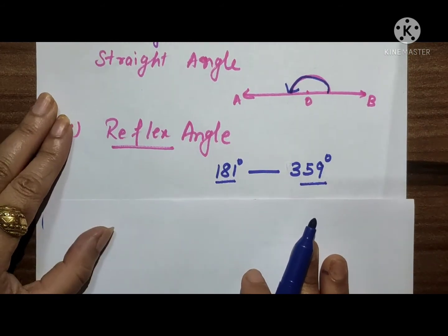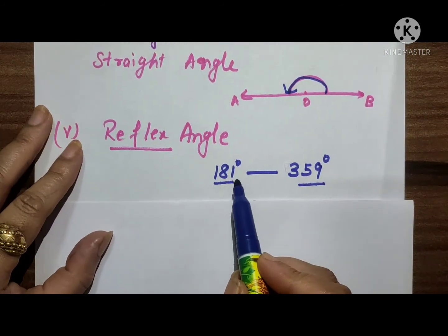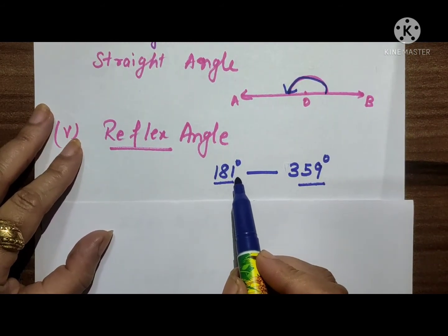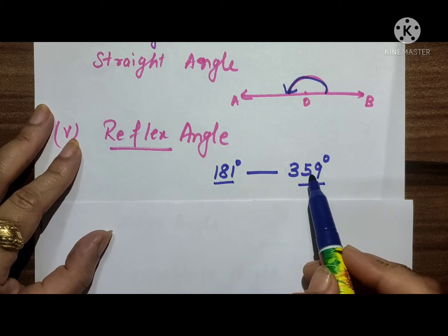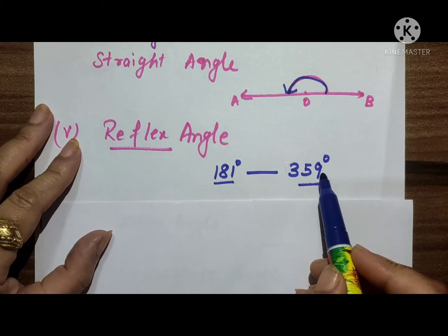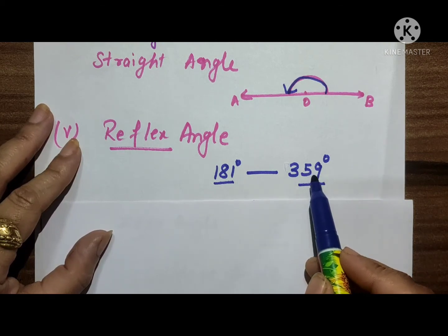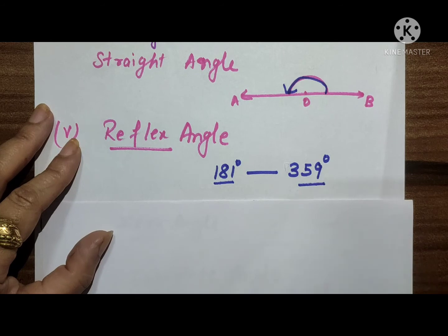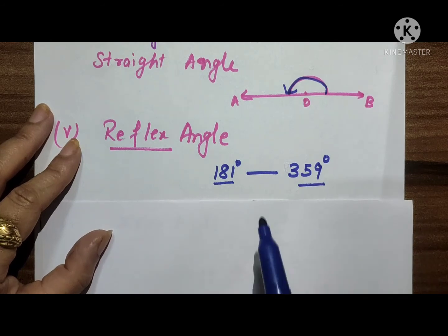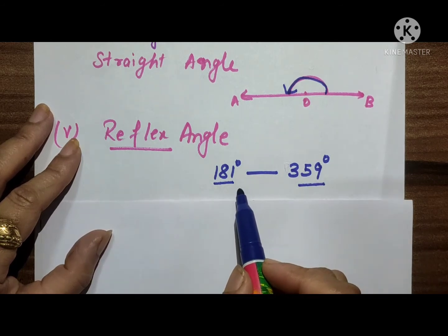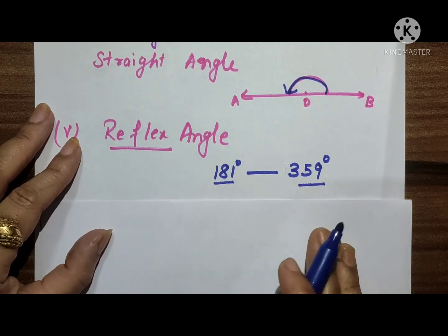Next is the reflex angle. A reflex angle is one whose measure is between 180 degrees and 359 degrees.